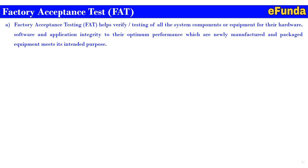Factory acceptance test (FAT). Factory acceptance testing helps to verify and test all system components or equipment for their hardware, software and application integrity to their optimum performance, by which the newly manufactured and packaged equipment meets the intended purpose. The FAT validates the operation of the equipment and makes sure that the customer purchase order specification and all requirements have been met.